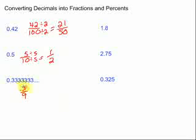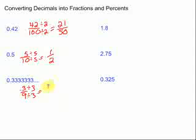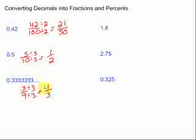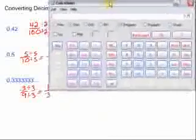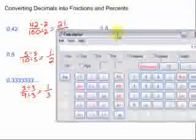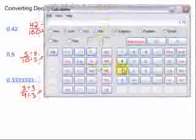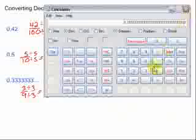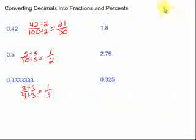Then we can simplify that as well by dividing by 3 on the top and the bottom. 3 divided by 3 is 1. 9 divided by 3 is 3. If you don't believe me, 1 third, remember we can change that back into a decimal by dividing it. So 1 divided by 3 gives us, sure enough, the 0.3 repeating. So we can make that conversion back to check our answer.